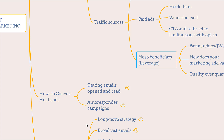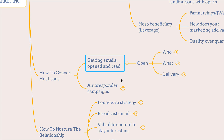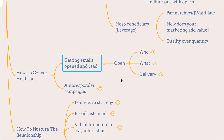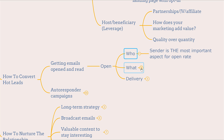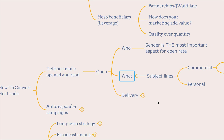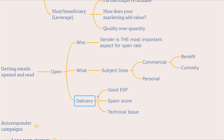Next, let's talk about how to convert hot leads — getting emails opened and read. There are three factors responsible for whether an email will be opened or not: who, what, and delivery. The sender is the most important factor for open rate. No matter how important the subject line and valuable content are, if they don't trust you as a sender, they are not going to open the email.